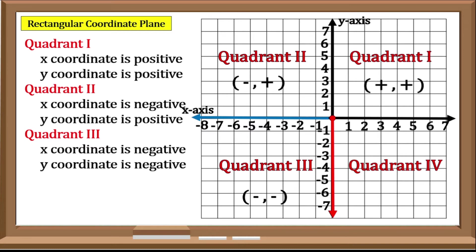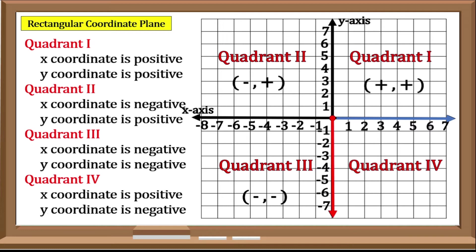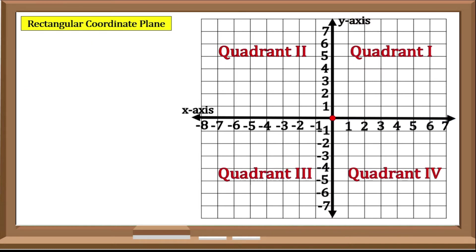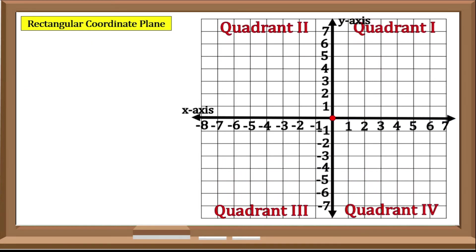And the last region, the 4th Quadrant. Now let us try to plot a point on a plane and determine what quadrant they lie in. For an instance: